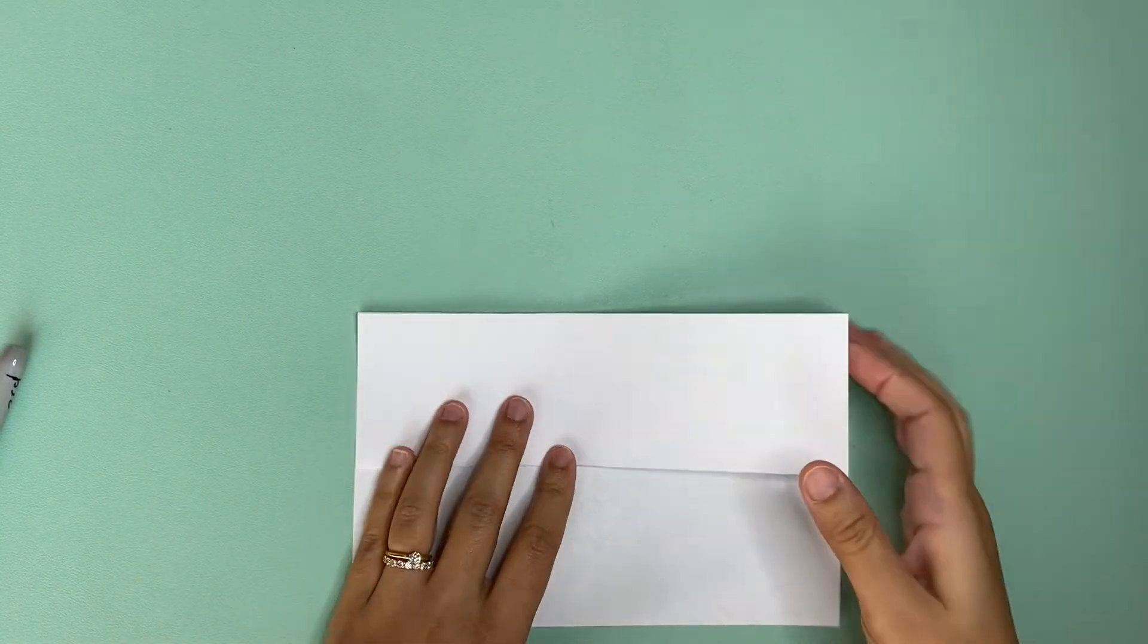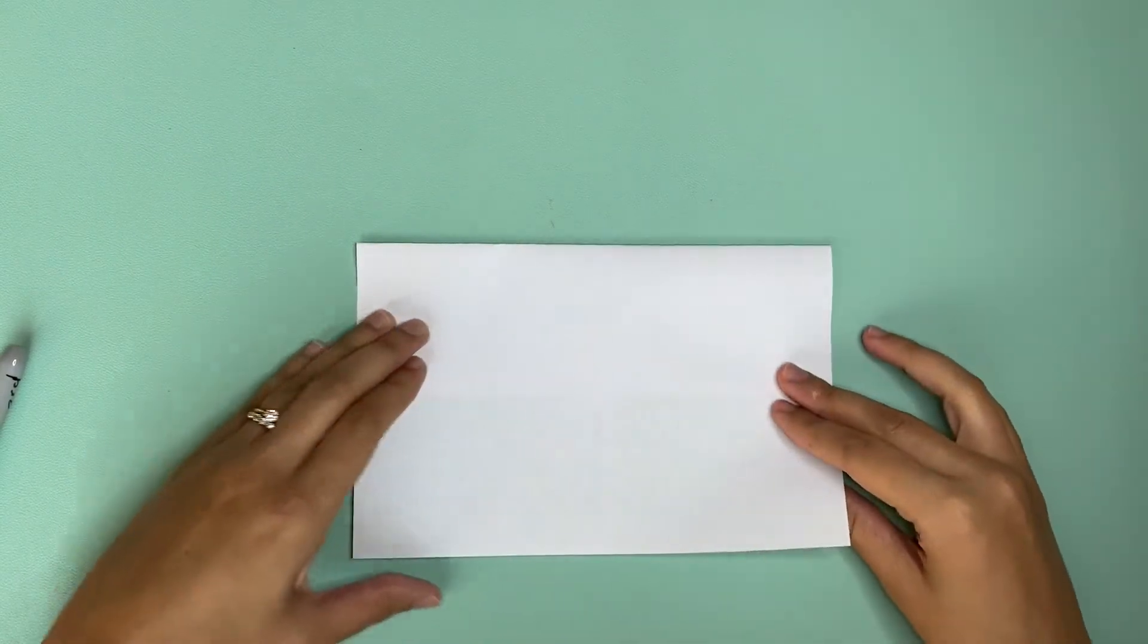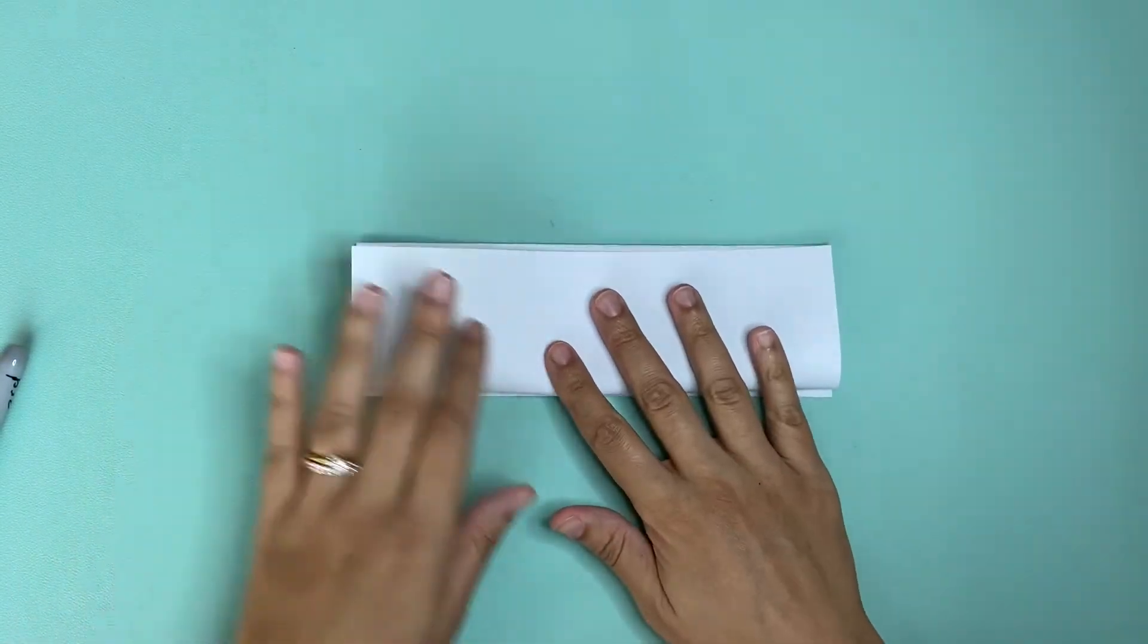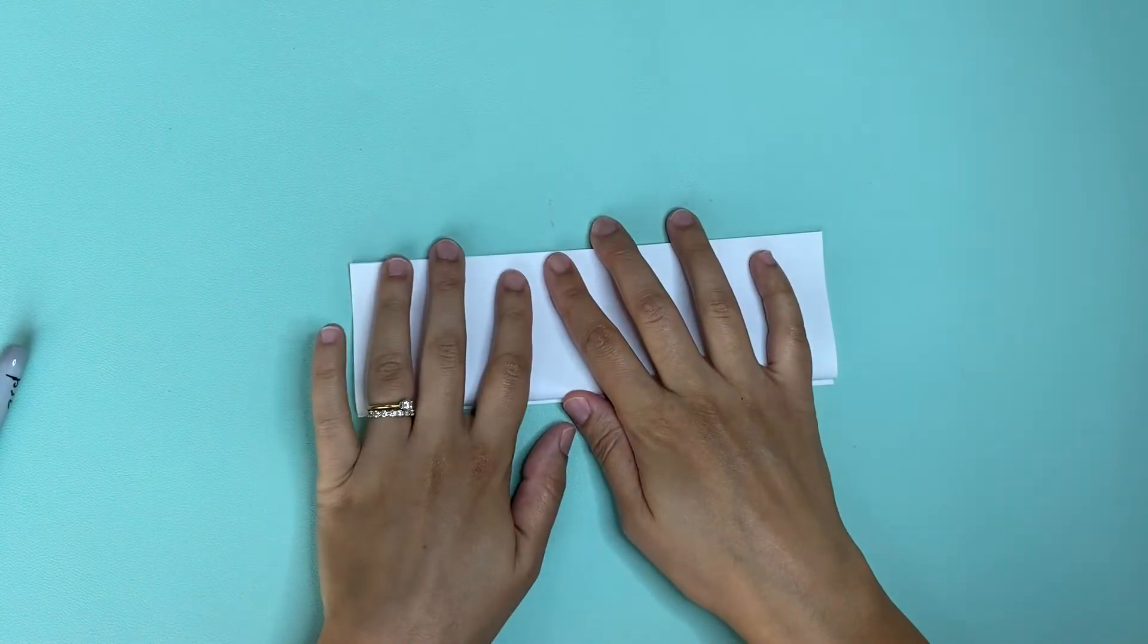Make a crease. Now turn it over. You're going to take the bottom and go up to the top and then you're going to make a crease.